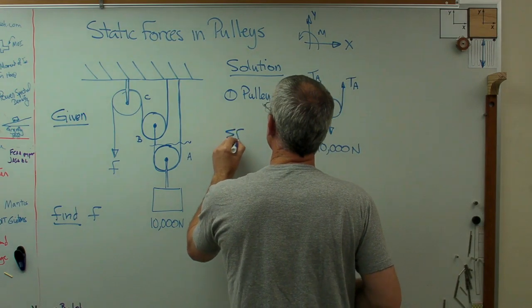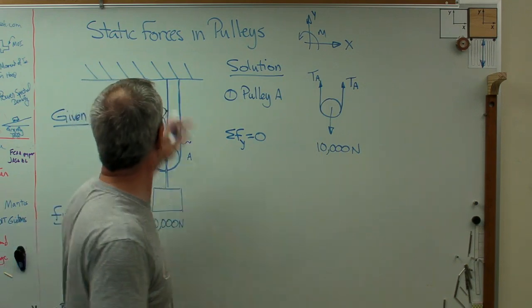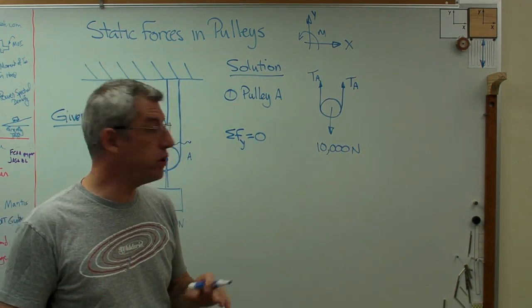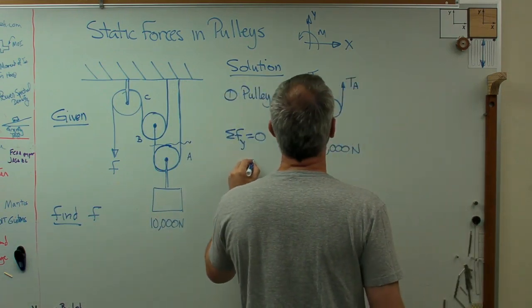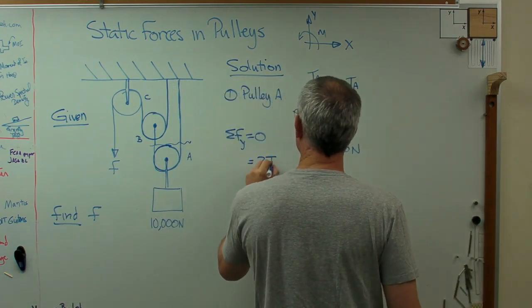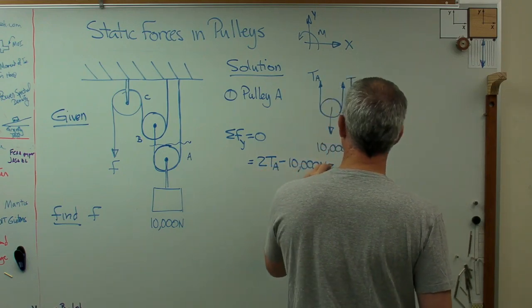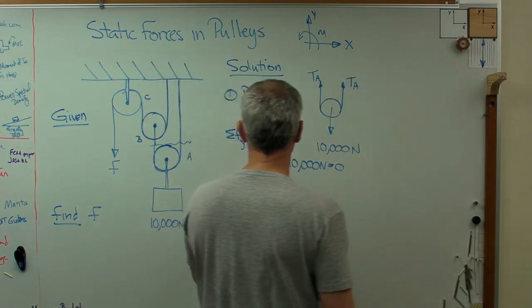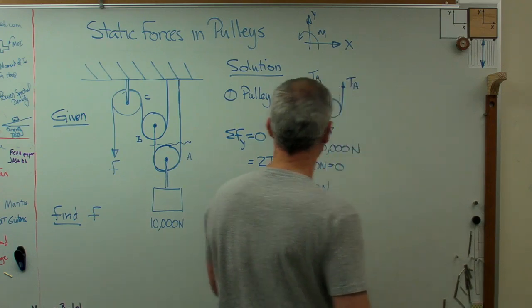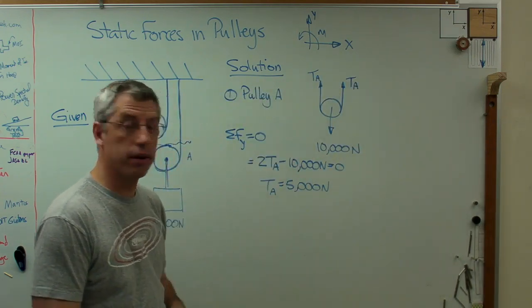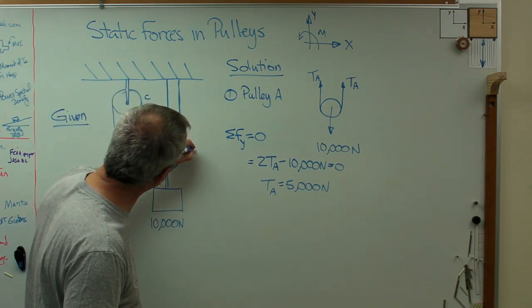And let's start adding up the forces in the vertical direction. The sum of the forces in the Y direction has to be zero or our pulleys are in motion. This is a static problem. There's no motion. So the sum of the vertical forces has to be zero. And so I'm going to write from there, I'm going to say that 2TA minus 10,000 newtons has to equal zero. We'll solve that. It's pretty obvious that TA is going to be 5,000 newtons. It's going to be half of the weight there. So you can see how this magnification thing is going to work. So now I know I've got that one covered.